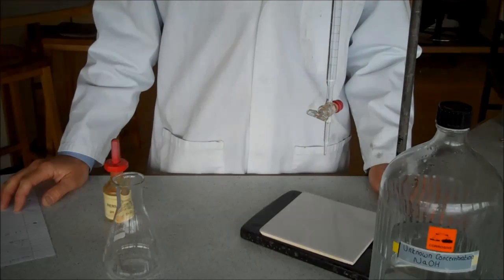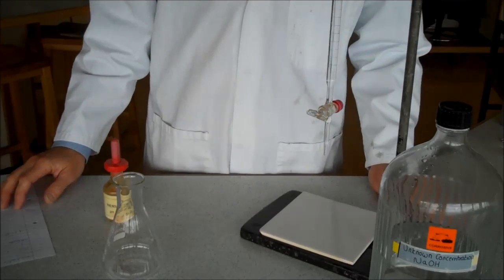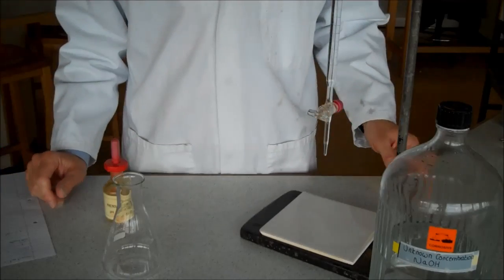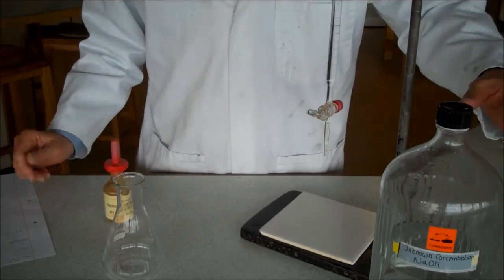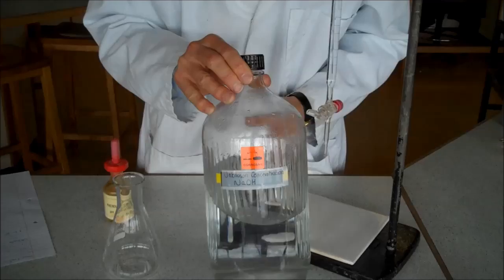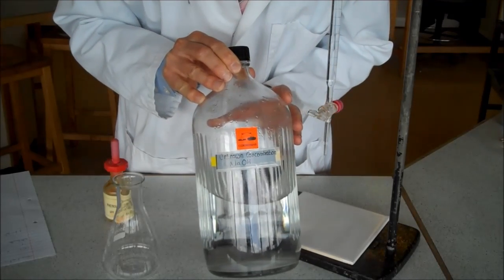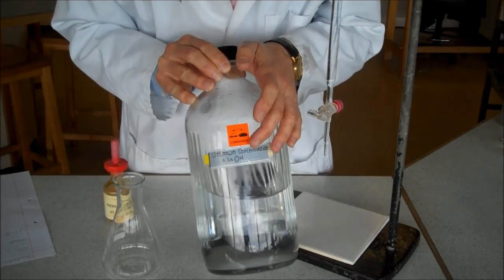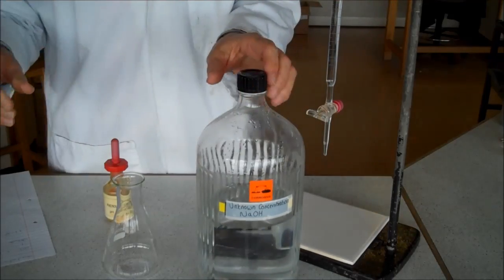This is how to carry out an accurate titration of an unknown solution where you want to find out its concentration. We're dealing with an unknown solution of sodium hydroxide. Notice it says corrosive, so we've got lab coat and goggles on.